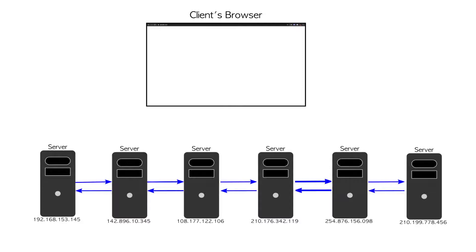Each computer is connected to the network with networking cable — there's a network infrastructure throughout the world, and these are all connected all around the world. There are obviously more than the six I have on screen. Each one has a unique address, and if you look below each computer, you'll see an IP address. This is actually an IPv4 address — it's a unique number given to each server. They are unique and not shared, so no two computers have the same address. This ensures that network traffic goes to the correct server.